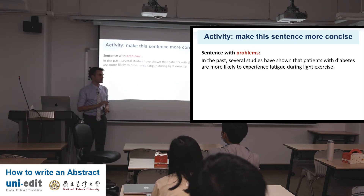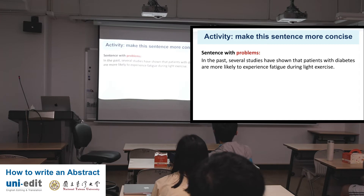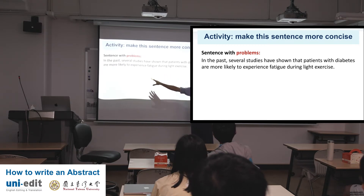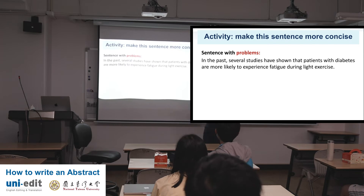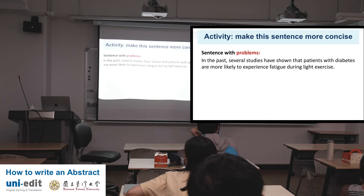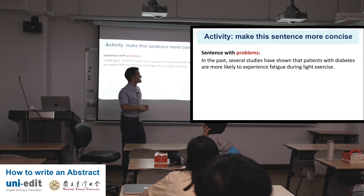Here's a sentence with a problem: 'In the past, several studies have shown that patients with diabetes are more likely to experience fatigue.' Two mistakes — what are they? First: 'in the past' is redundant. Isn't every published study in the past? You would never cite a future study, which makes 'in the past' useless, especially in the abstract. Second: 'have shown' — this is wordiness. The corrected sentence: 'Patients with diabetes are more likely to experience fatigue during light exercise.' We cut out the entire first part — 'in the past, several studies have shown' — because we assume you've done the research.